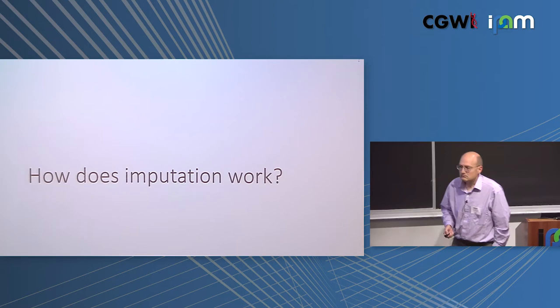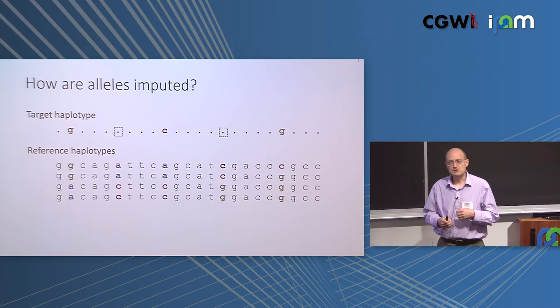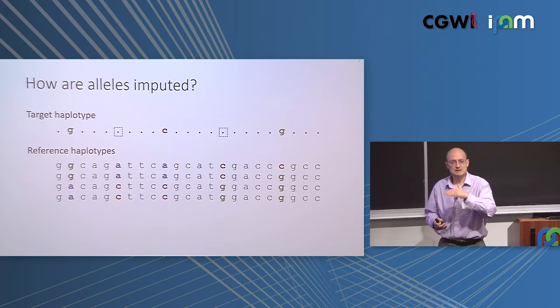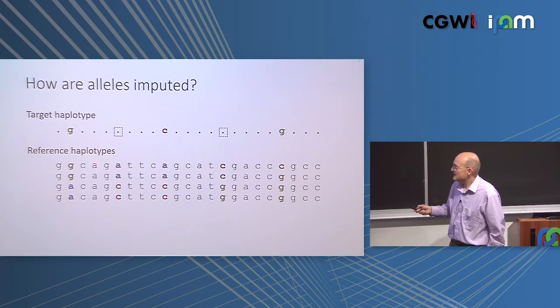So how does it work? Typically we first phase the data — we use statistical methods to estimate haplotypes. Rather than imputing genotypes directly, we phase the data and an individual has two haplotypes; we take each haplotype and infer the missing alleles. We have reference haplotypes in the reference panel; we're interested in the markers that are polymorphic, color-coded here. The usual approach is to assume the target haplotype is copying segments of the reference haplotypes.